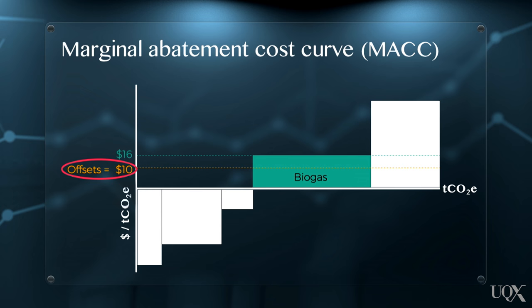So, in a nutshell, a MAC is a useful way to visualise and understand the internal abatement options for an organisation, and compare their relative cost and climate mitigation performance against other compliance options. We will expand on this further in Part 4's Practical Activity, where you will apply this new understanding to build a MAC for your Taslan company.